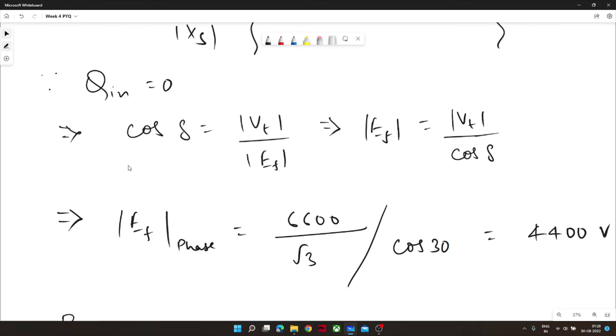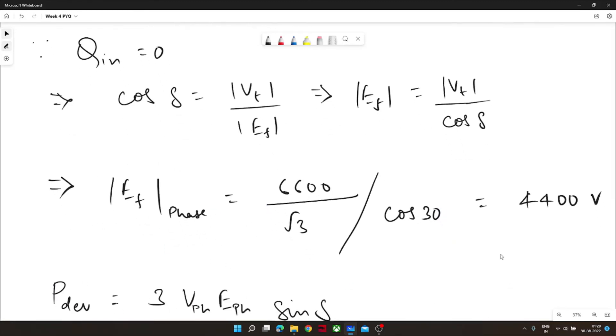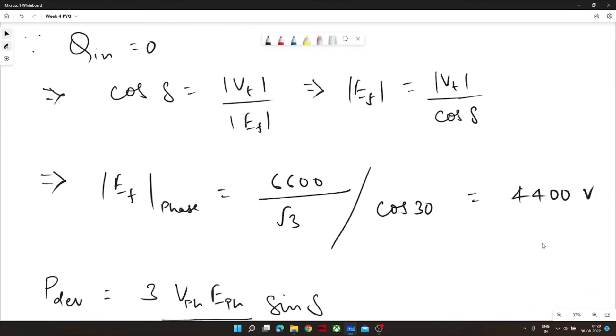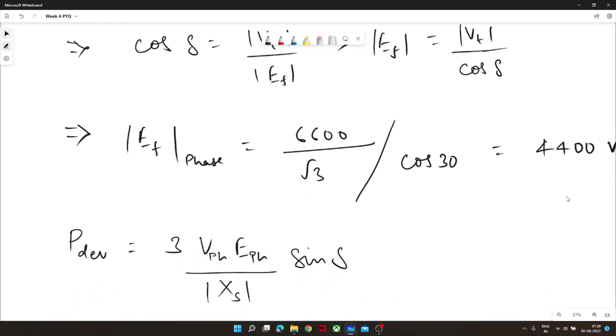Now to calculate P developed we need to put in the formulae of P developed and since it is a three phase machine so we should remember to multiply this equation by three. The power developed is three V_phase E_f by X_s sin delta.